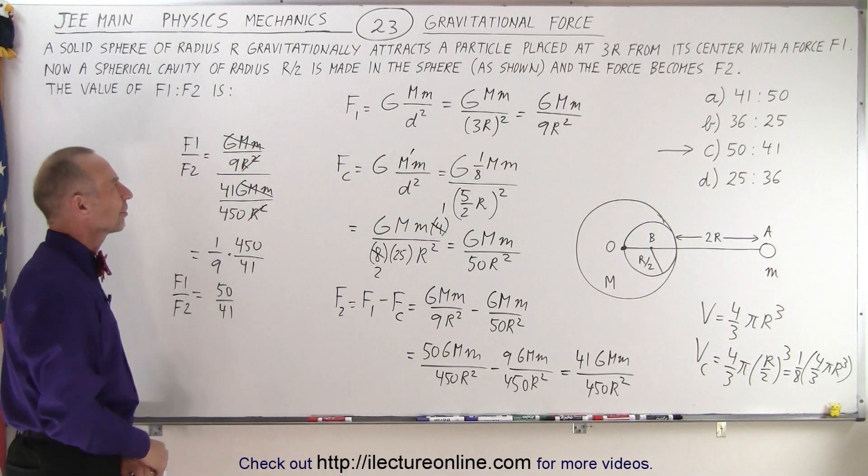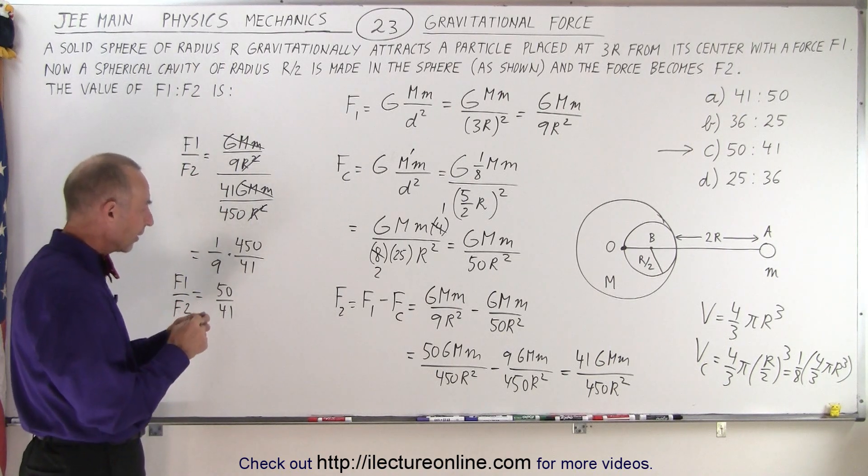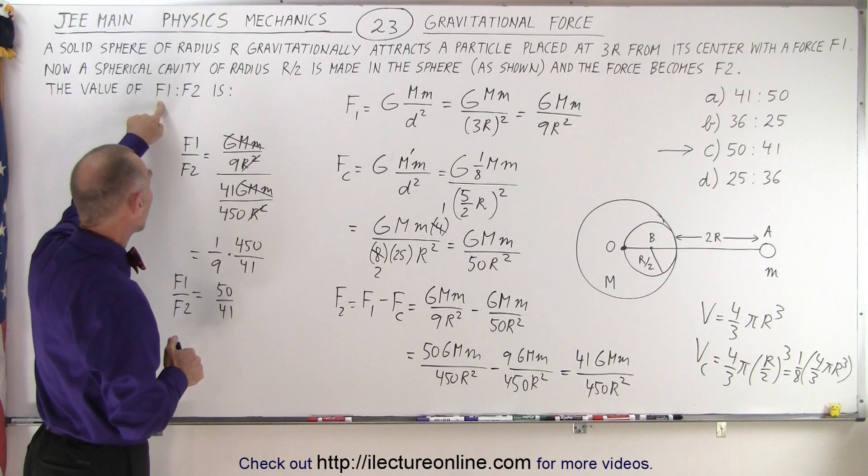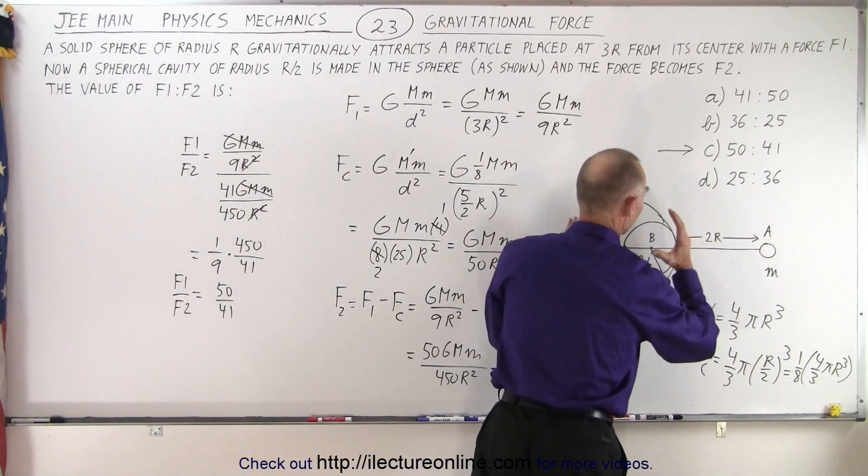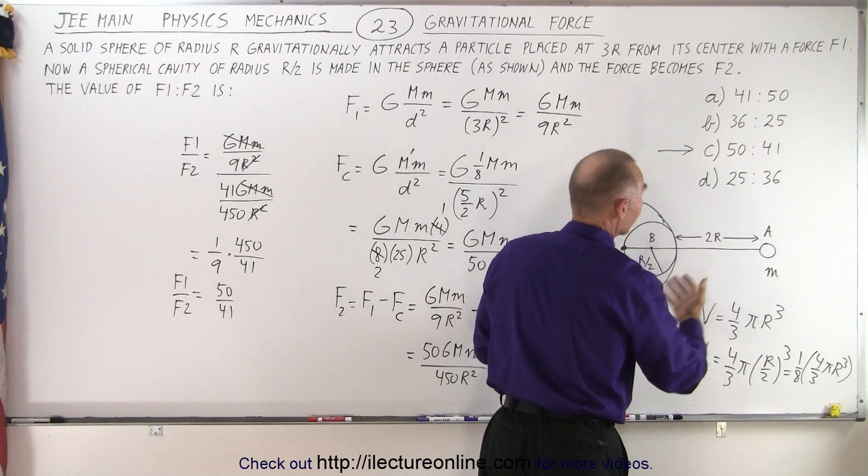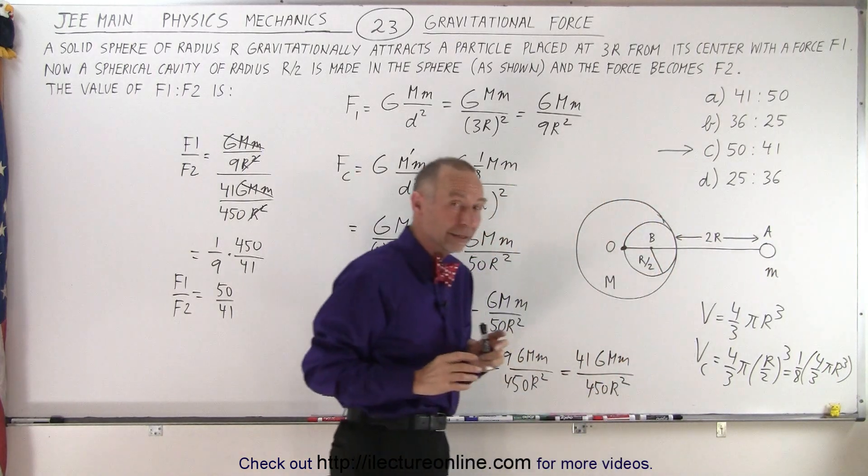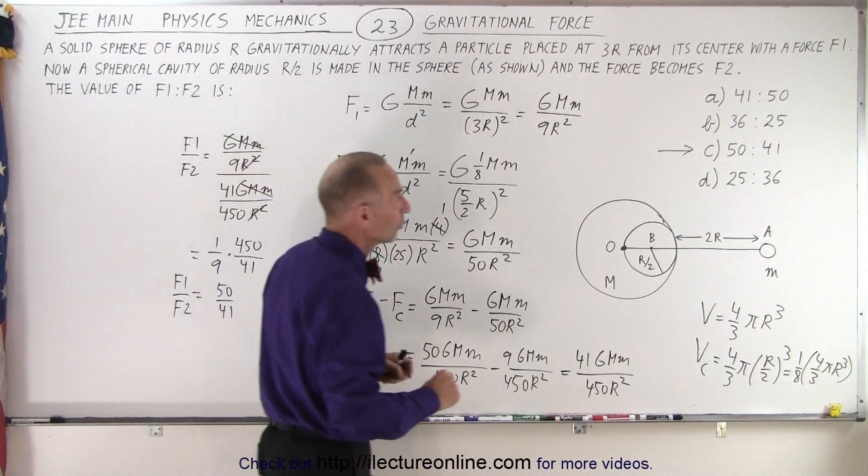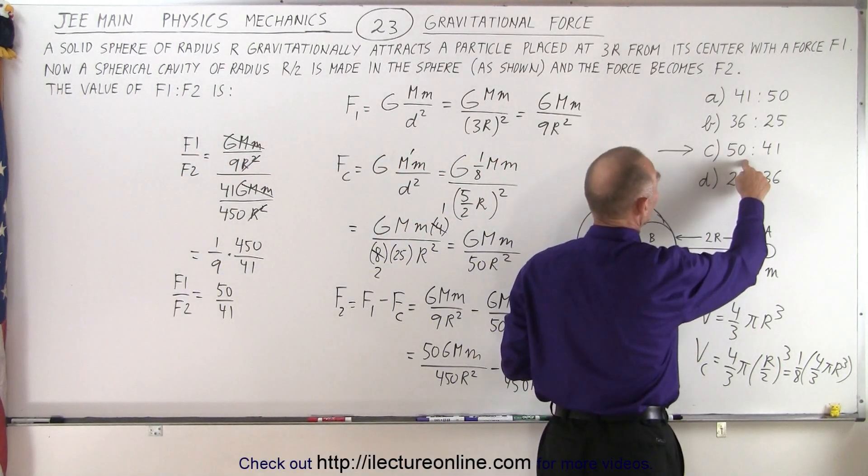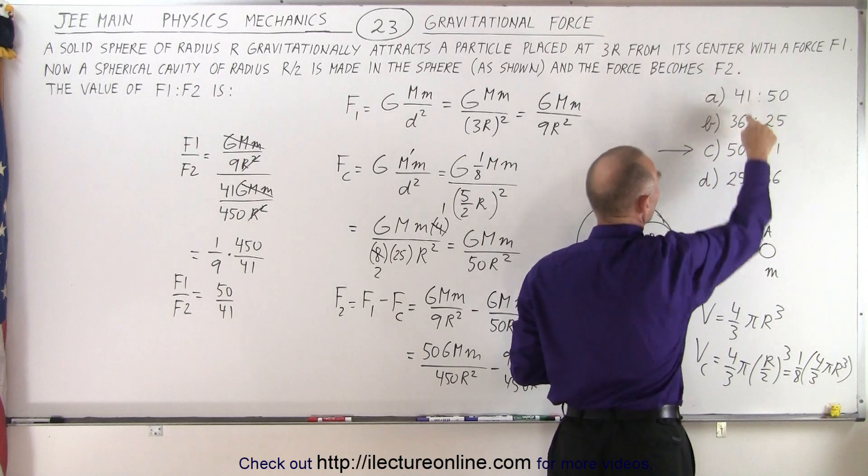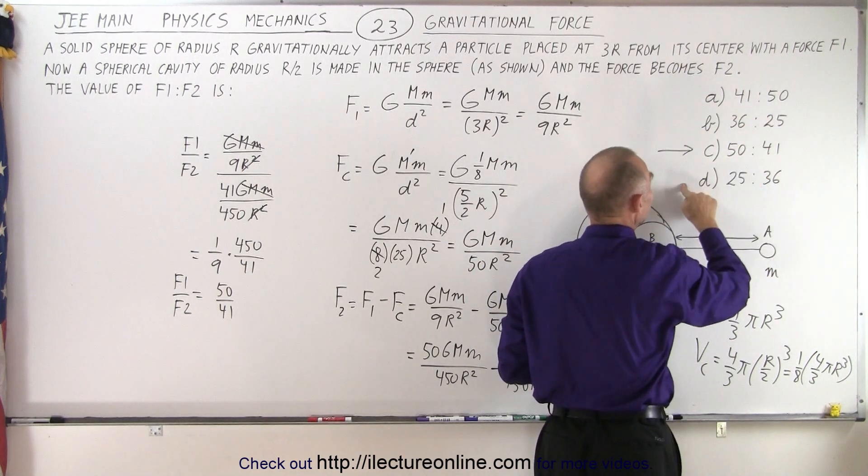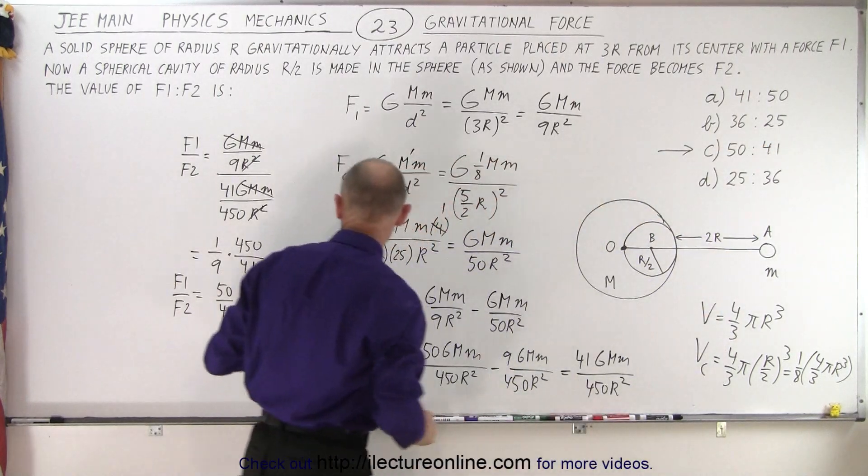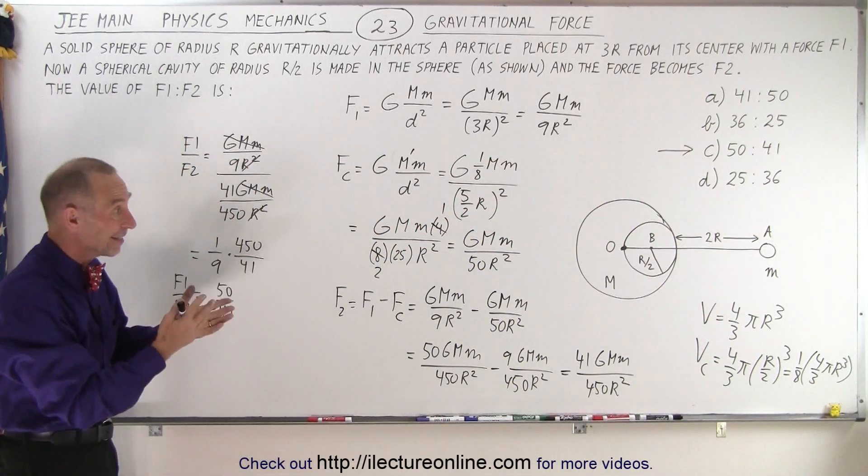Now does that make sense? Well it turns out that if we think about it we know that the force between the object and the full sphere needs to be bigger than the force when we make a cavity in there. So we expect an answer greater than 1 which this is the case. So notice that this one is greater than 1, that's greater than 1. These two are less than 1 so it cannot be A and it cannot be D. It's got to be B or C and C is the same answer that we got here.